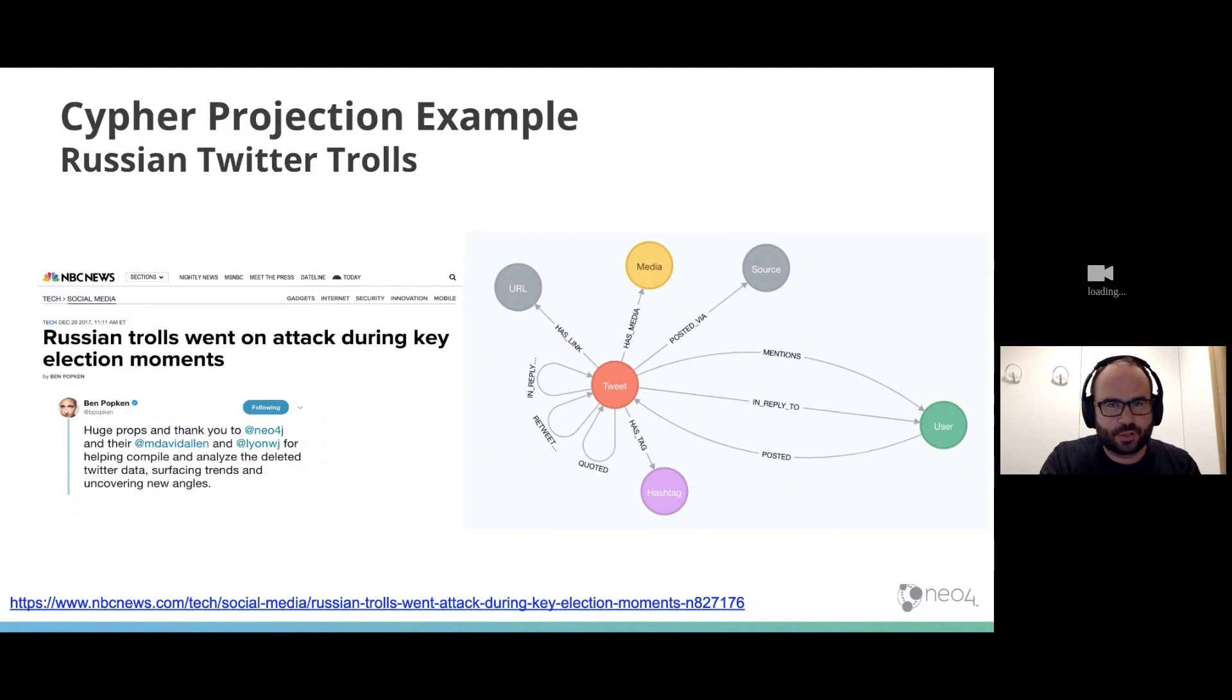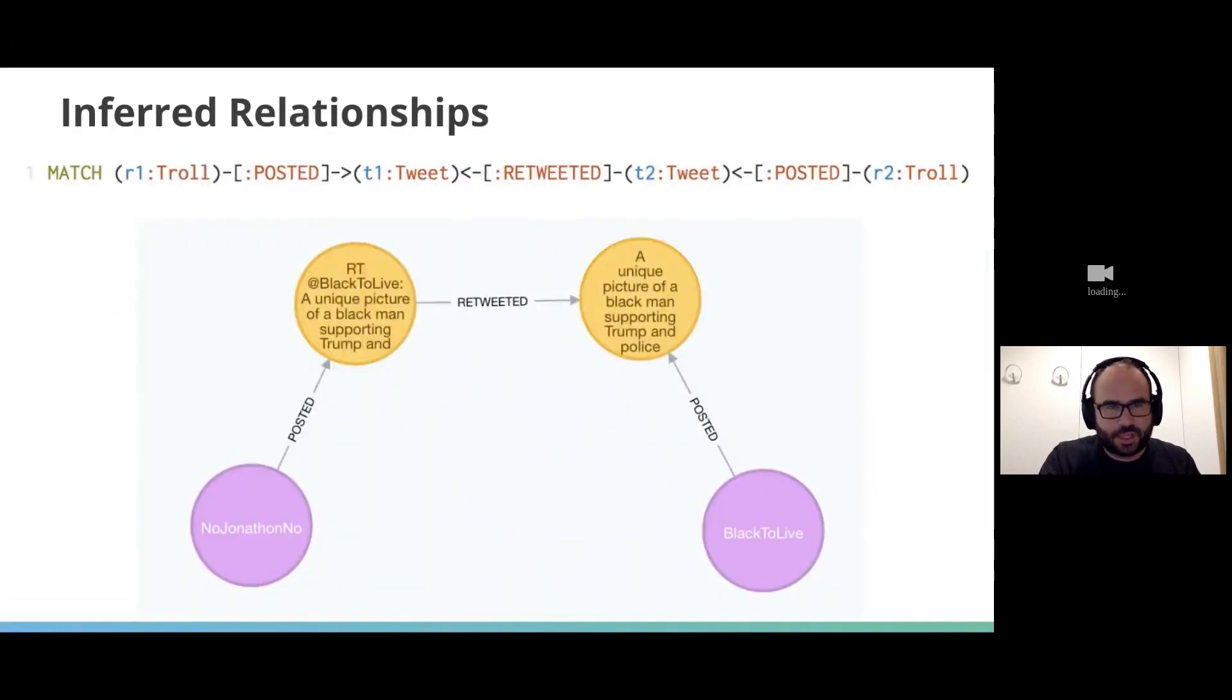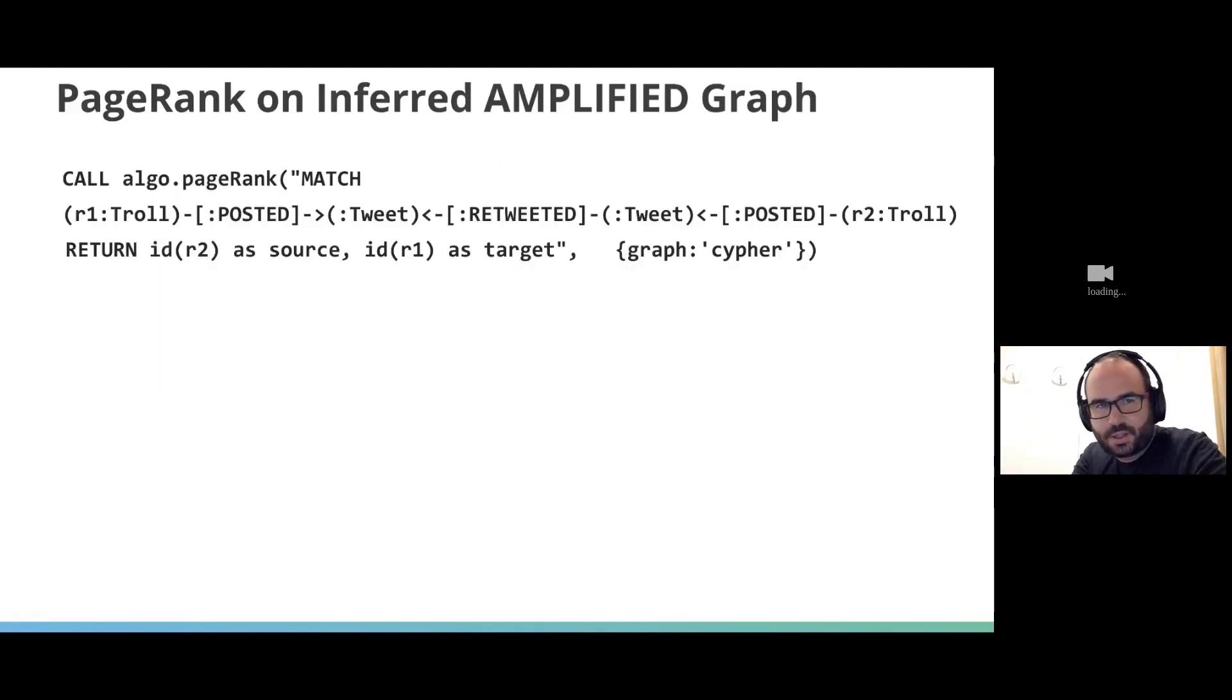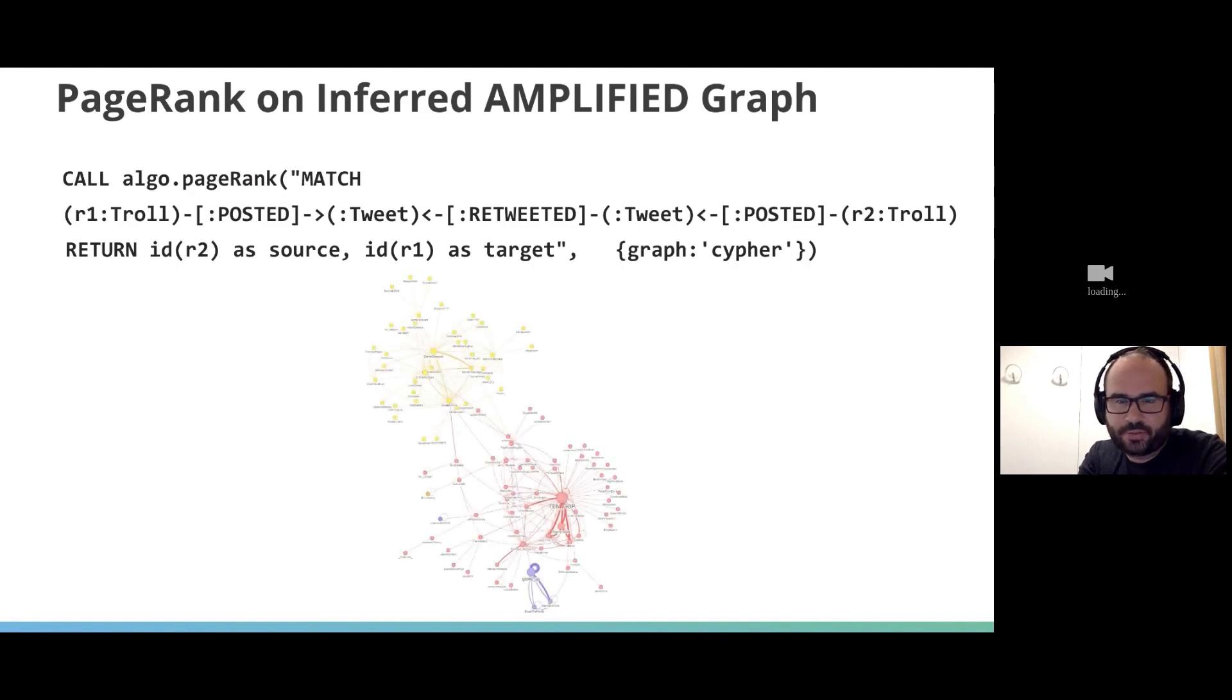Let's look at an example from the Russian Twitter trolls project. I also run what we call the Neo4j data journalism accelerator program. In this program we work with data journalists to try to make sense of data for stories using Neo4j. For this project we worked with some folks at NBC news that got a hold of some leaked Twitter data and we analyzed it in Neo4j. When we're talking about this idea of a graph projection, we're talking often about inferred relationships. So here we have a user posted a tweet that was a retweet of a tweet posted by another user. What that means is there's this inferred relationship from one user to the other. If you retweet a tweet posted by another user, you're sort of amplifying the message of that other user. That's this inferred graph in this case, the inferred retweet or amplified graph from the Russian troll network.